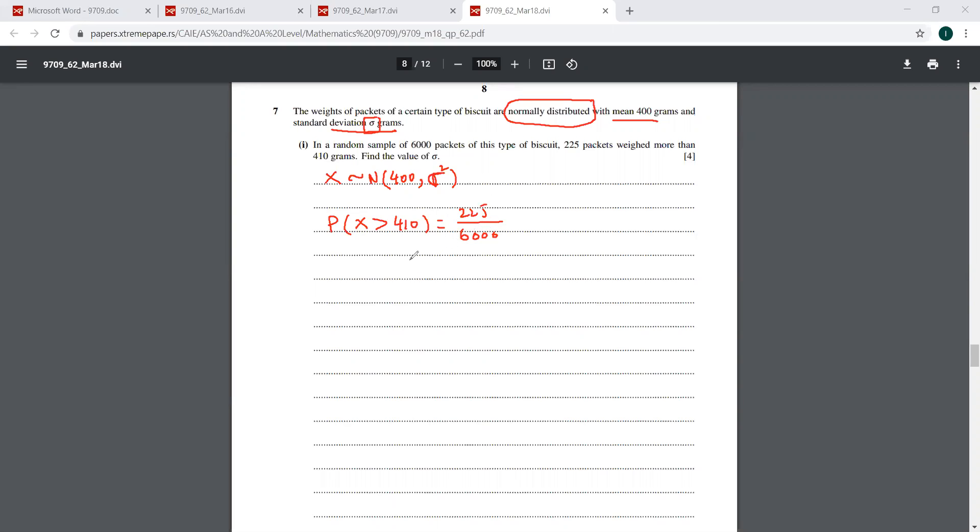So this is 225 divided by 6,000, which equals 0.0375. So this is the probability given to us. And we straight away start that standardization here.